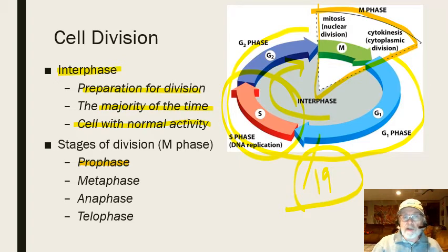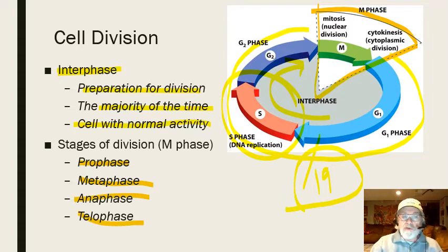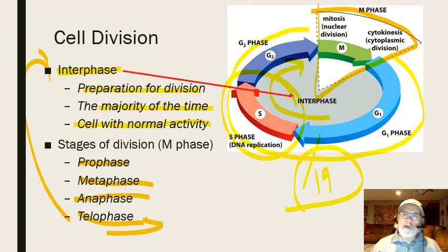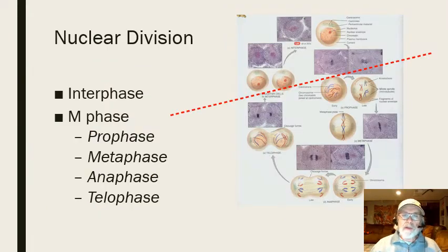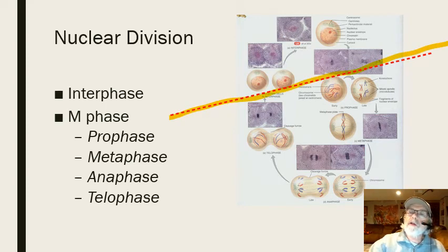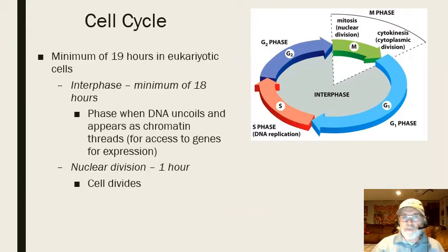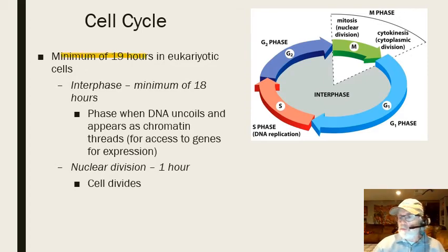During most of interphase, the cell is just doing normal everyday activity — the same routine every day. The smaller portion of the cell cycle is the M phase — the division or mitotic phase. This includes several stages: prophase, metaphase, anaphase, and telophase, after which the cell returns to interphase. The mitotic phase is very short; if a total cycle is 19 hours, about 1 hour is the M phase and about 18 hours is interphase.